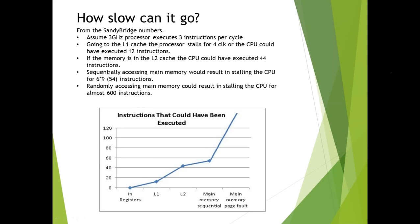If data is in a register it takes 0 clock cycles. If it's in L1 cache, on a 3 GHz processor that can execute 3 instructions per cycle, 4 clock cycles means 12 instructions the CPU could have executed but didn't. If we have to go to L2 cache, we could have executed 44 instructions. Going to main memory for 6 nanoseconds, we could have executed 54 instructions wasted. And if there's also a TLB miss requiring a new page to be brought in, we could be waiting the equivalent of 600 instructions — so no matter how fast your CPU, if it's just sitting there waiting, you have to start making sure data is in the cache.